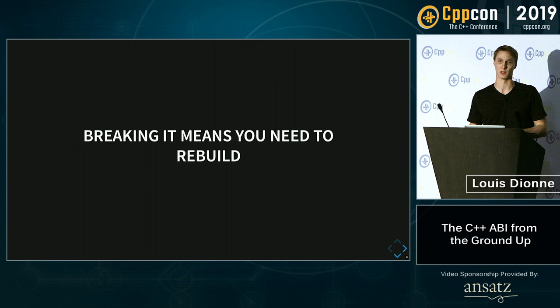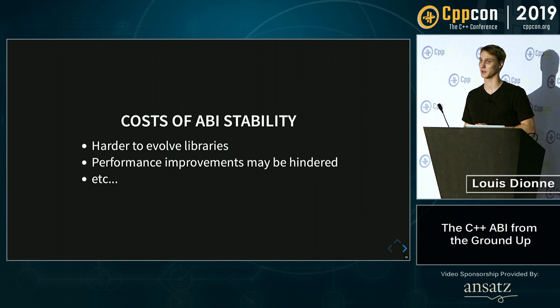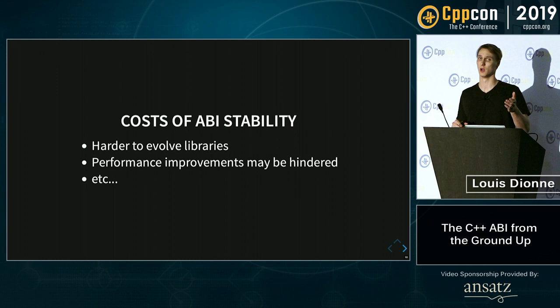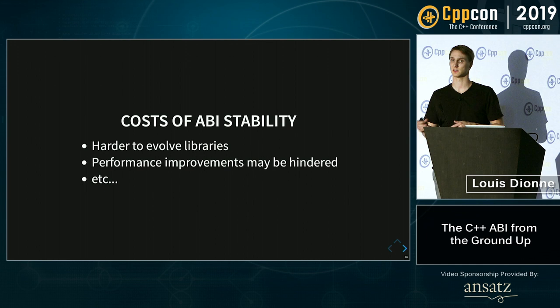Obviously when you break the ABI it means you need to rebuild all the dependents of the binary for which you broke the ABI, which is not always possible. There are costs associated with ABI stability, just like there are costs with API stability. Namely, it's harder to evolve libraries if you can't break backwards compatibility. If you want to make performance improvements and cannot break the ABI, it can be kind of hard to adopt the latest best practices.